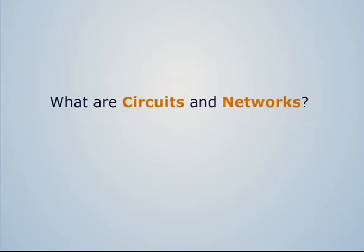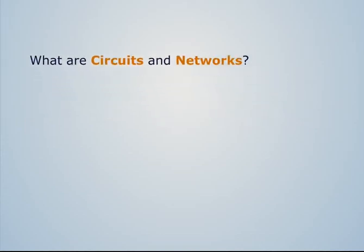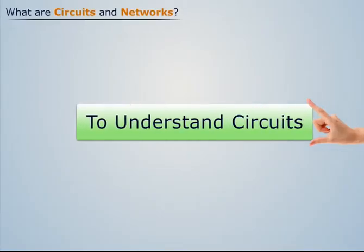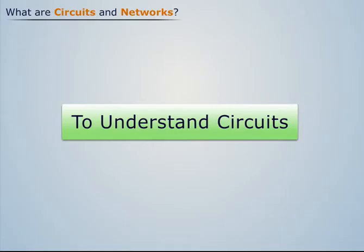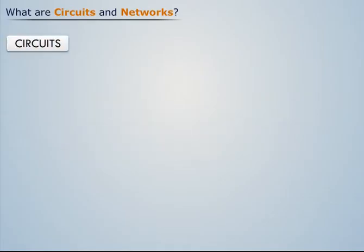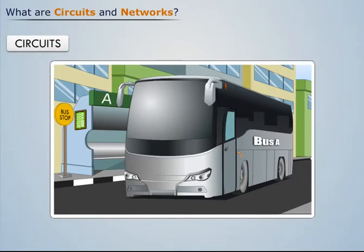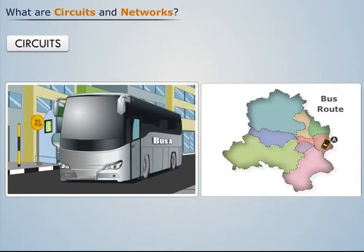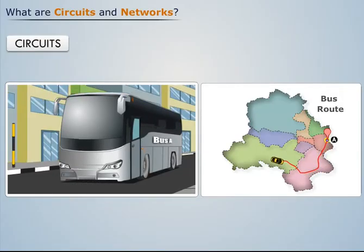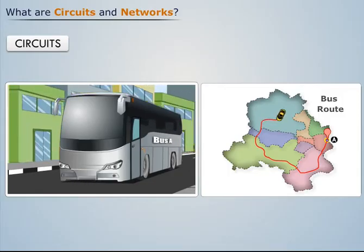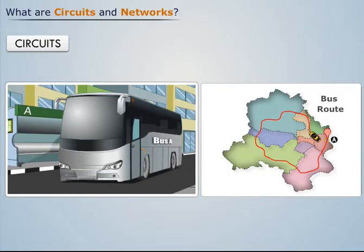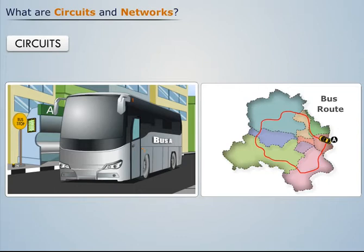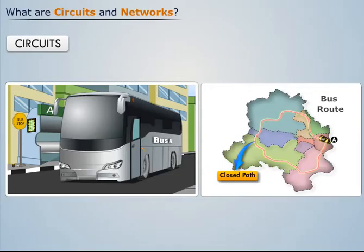What are circuits and networks? First, let's understand circuits. Consider a bus starting from point A. The bus travels along a particular route and returns to point A. We see that the bus travels along a closed path, thus we can say that the route is an example of a circuit, as it forms a closed path.